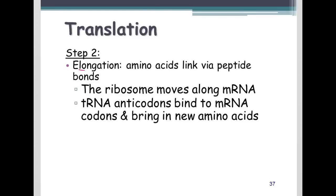From there, we get to elongation, where amino acids will link via peptide bonds. Remember from biochemistry that that is the bonds that link amino acids, the monomers, together to create a polymer of a protein. The ribosome moves along the mRNA.